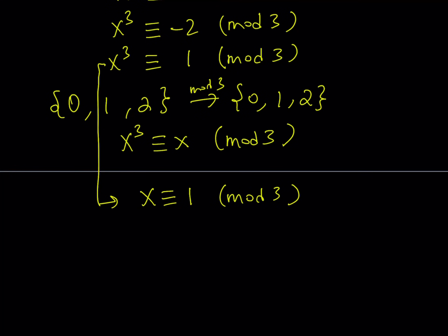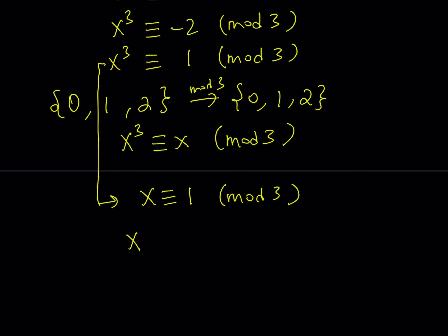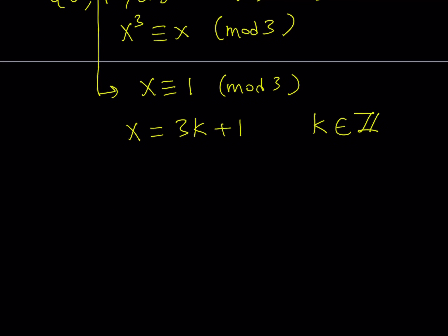And, we can write this as an equation, not a congruent statement. So, we can write it like x = 3k + 1, where k is an integer. Z represents the set of integers in this case. So, x can be written like that because it leaves a remainder of 1 upon division by 3.